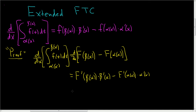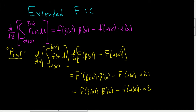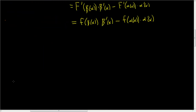Since big F is an antiderivative of little f, big F prime is little f. So we get little f of beta of x times beta prime of x minus little f of alpha of x times alpha prime of x. And that's the proof sketch — kind of terse.